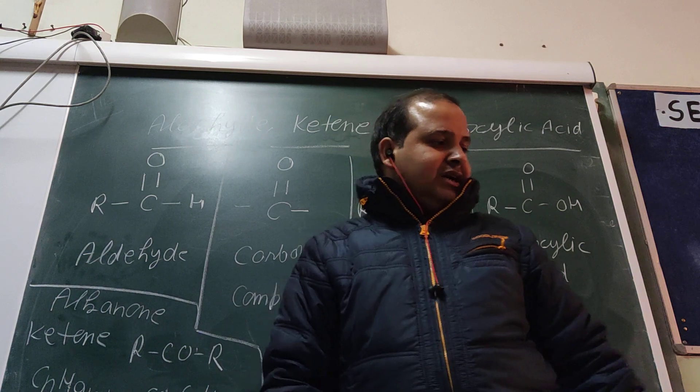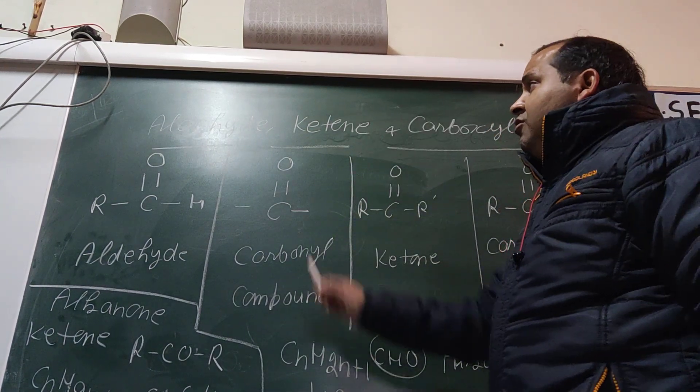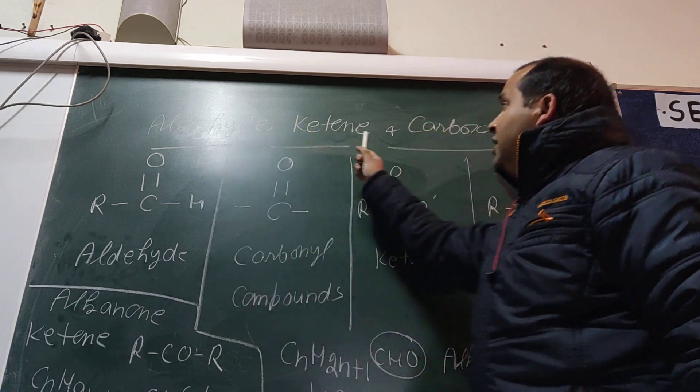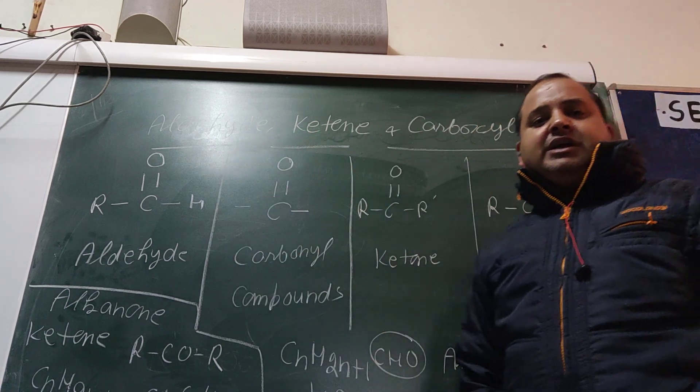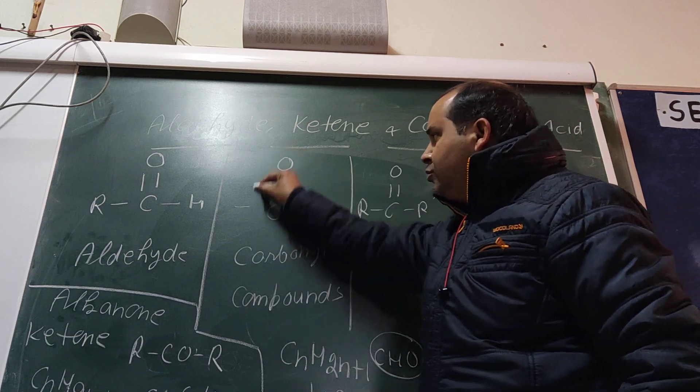Now we start with aldehydes, ketones, and carboxylic acids. What are aldehydes, ketones, and carboxylic acids? Actually, these are carbonyl compounds. You can see C double bond O, C double bond O.